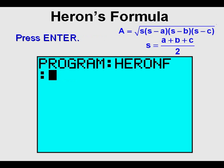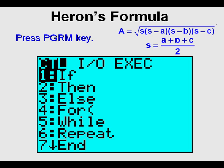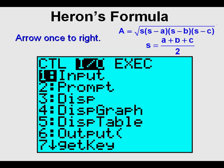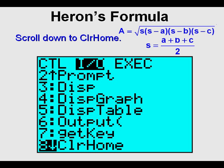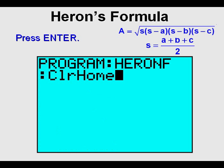Press Enter. The cursor is blinking, awaiting your entry of the first line of program code. The first line of code: go to the program key right under the STAT key, arrow once to the right to get to the input-output menu, scroll down to 8, which is ClrHome. Press Enter. This ClrHome step is usually a good first step in programs because it clears off the view screen for the display to follow.